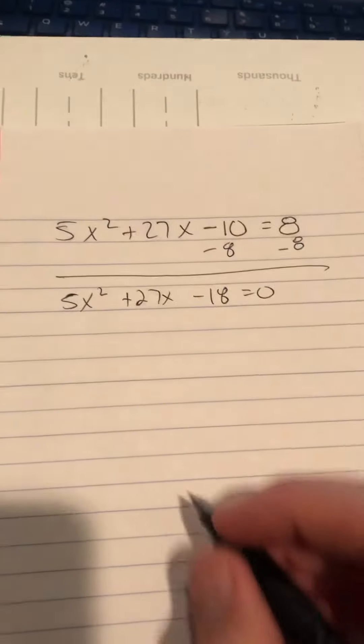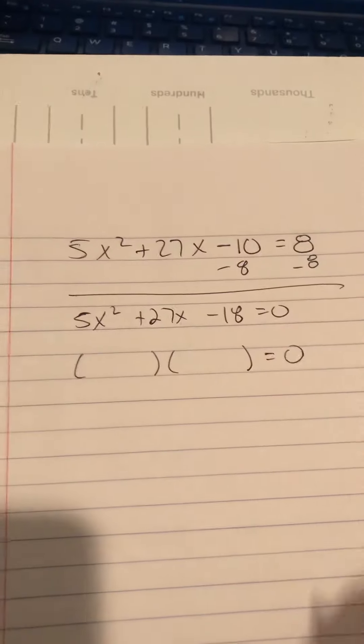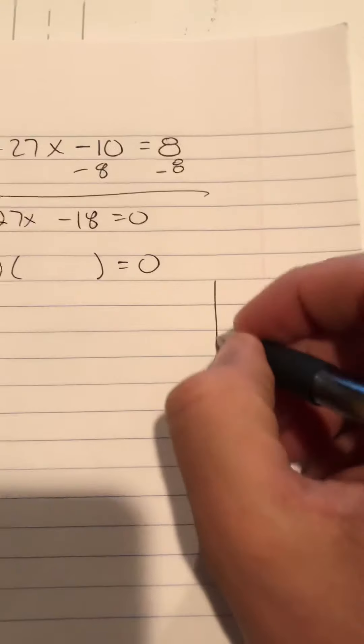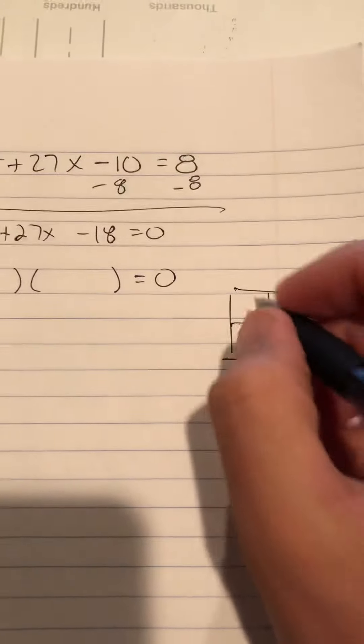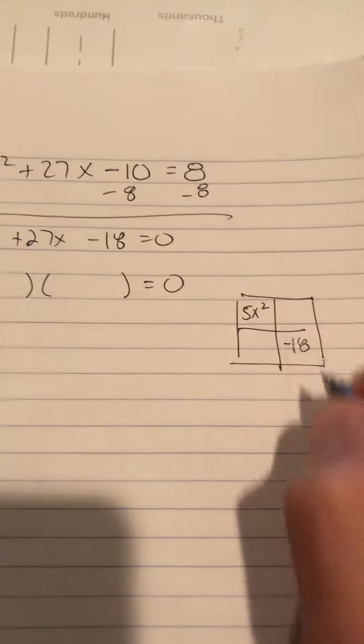Now I'm ready to factor. Now in order to factor this trinomial into two quantities, I'm going to have to use the box method. So I'm going to look over here to the right. In the upper left-hand corner, I'll put 5x squared, and in the lower right-hand corner, I'll put negative 18.